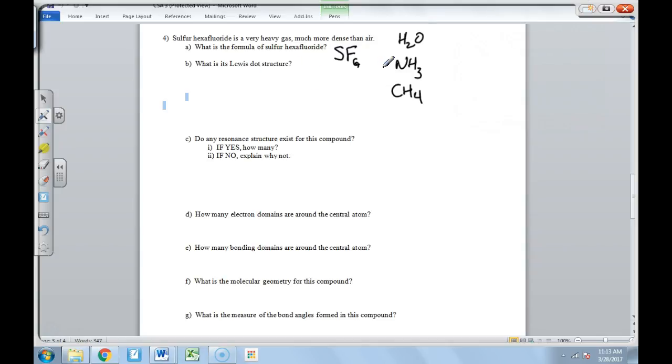Then I say, what is the Lewis dot structure? If you need help with Lewis dot structures, definitely go back and look at some of the Lewis dot structure videos. I'm just going to very quickly do this. Sulfur has six electrons and fluorine has seven, and there's six fluorines. So seven times six is 42 plus six is 48. Sulfur is the central atom. We do six fluorines around this thing, and then we put the dots. So this is the Lewis dot structure.